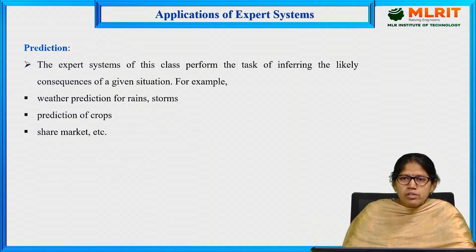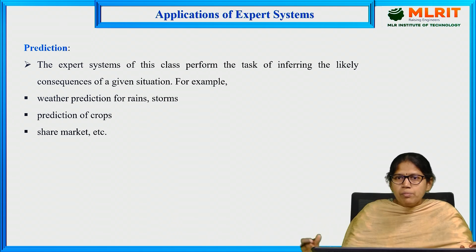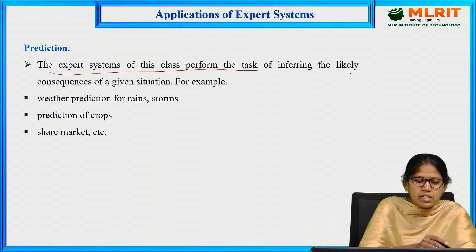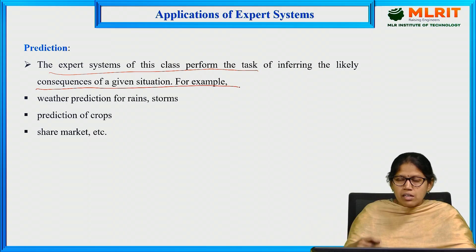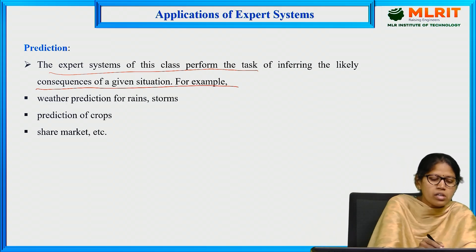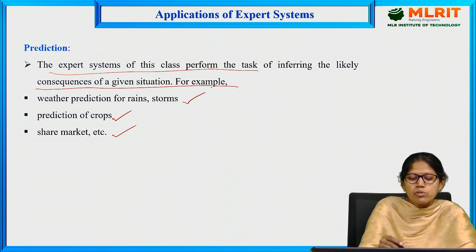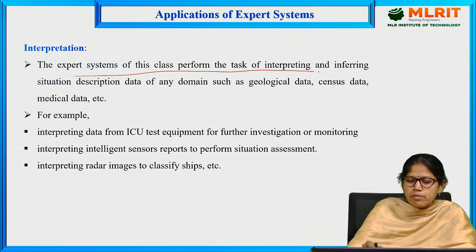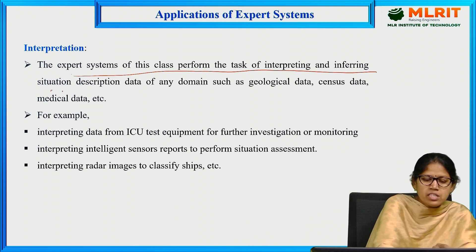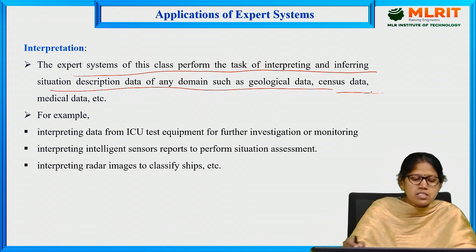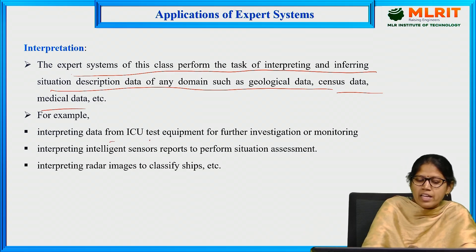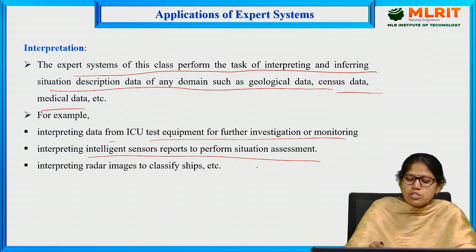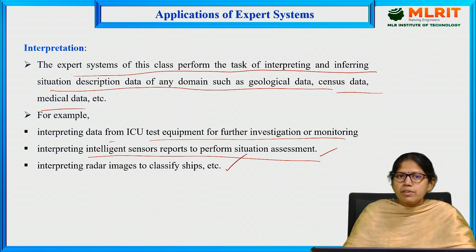The next application is prediction. Expert systems in this class perform the task of inferring the likely consequence of a given situation — such as weather prediction, stock market prediction, share market, prediction of crops, and prediction of rains and storms. The next application is interpretation. These expert systems perform tasks of interpreting and inferring situation descriptions from data in domains such as geological, census, and medical data — for example, interpreting data from ICU test equipment, interpreting intelligent sensor reports for situation assessment, and interpreting radar images to classify ships.